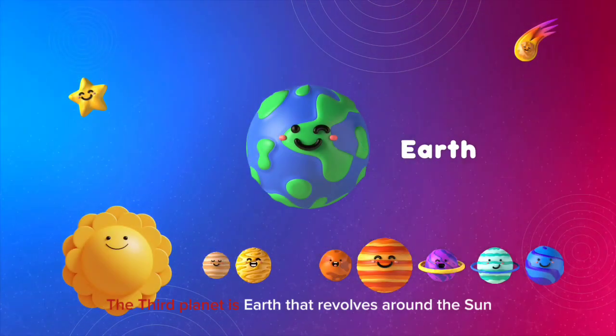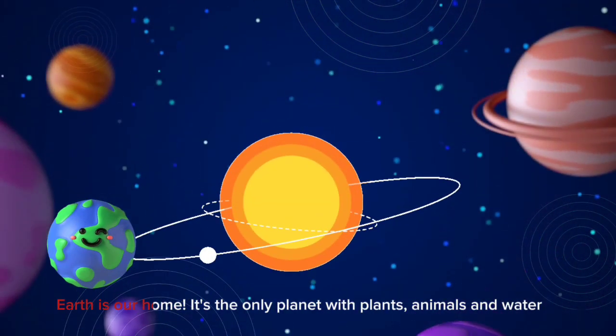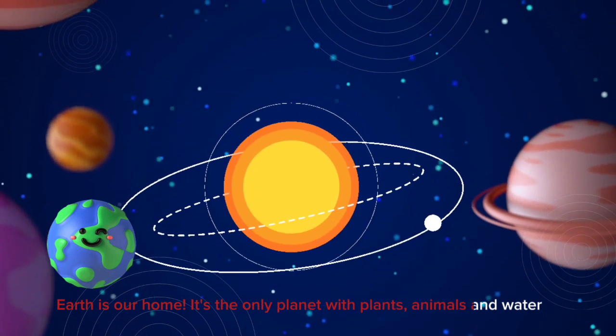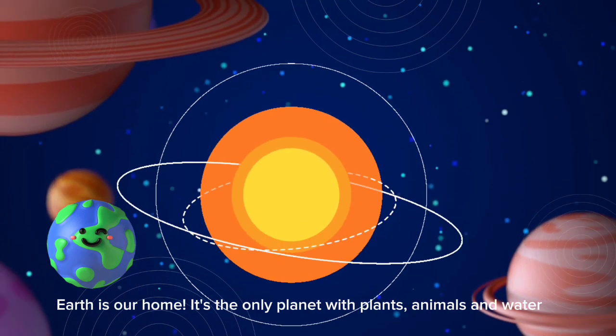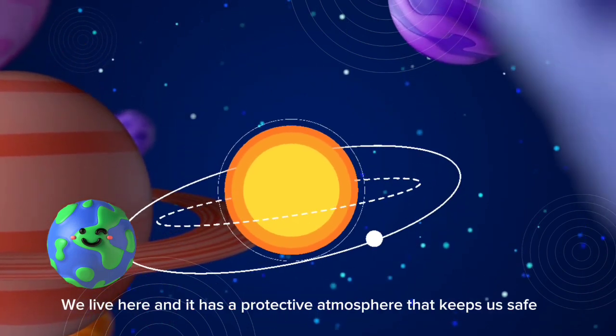The third planet is Earth that revolves around the sun. Earth is our home. It's the only planet with plants, animals and water. We live here and it has a protective atmosphere that keeps us safe.